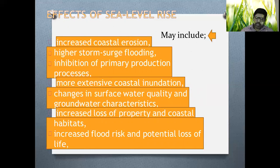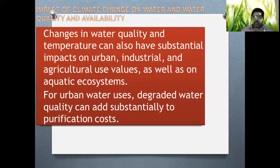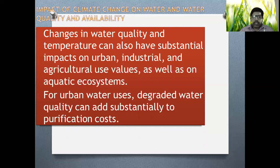It may increase loss of property and coastal habitat, as well as increased flood risk and potential loss of life. In total, it is a loss for the entire planet. The impact of climate change on water quality and availability will always be witnessed in the future, and many parts of the world are already witnessing it. Changes in water quality and temperature can also have a sustainable impact on urban, industrial, and agricultural reuse, as well as on aquatic ecosystems. Degraded water quality in urban areas can also increase purification costs.